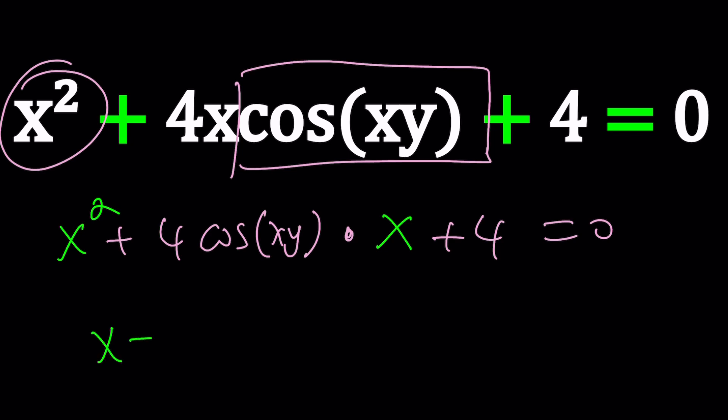So now from here, x becomes negative b, negative 4 cosine xy, plus minus the square root of b squared, which is 16 cosine squared xy, minus 4ac, and that'll be minus 4 times 4. That's a minus 16.